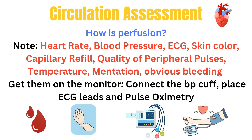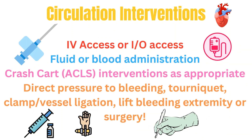So when the patient arrives, we get them on the monitor quickly — connecting the BP cuff, placing ECG leads, and pulse oximetry to collect these pieces of information as soon as possible. As for interventions, you get your patient on the monitor, get IV or IO access, and consider starting fluids, blood products, or even vasopressors depending on the likely cause of the shock. We address the ECG rhythm if needed. Depending on the cause, you may also have to send the patient to surgery. Fluids are the typical first-line agent because they are easily available when the patient is in or getting close to shock.